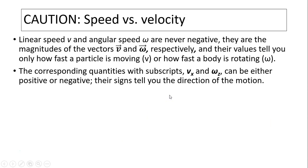Question: speed versus velocity. We know speed is a scalar quantity. Speed, both linear speed and angular speed, can never be negative. They're the magnitude of velocity. Linear velocity and angular velocity, on the other hand, if in one dimension Vx and omega z, they can be either positive or negative. That positive or negative indicates the direction of motion, not magnitude.